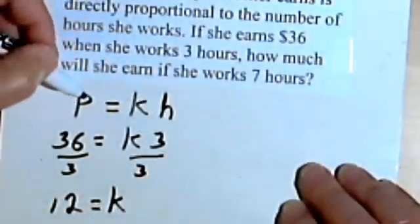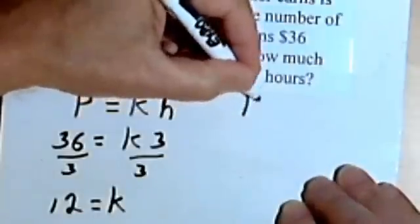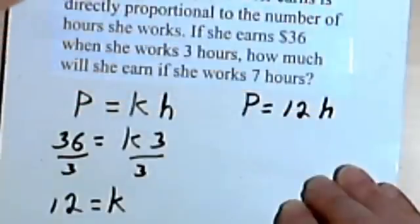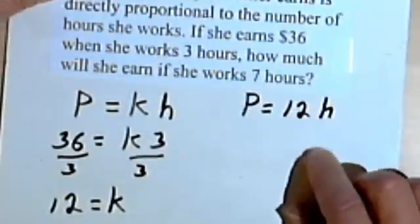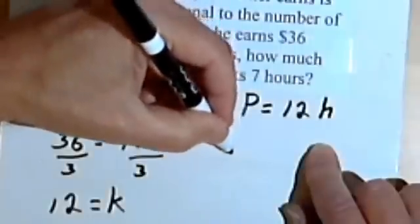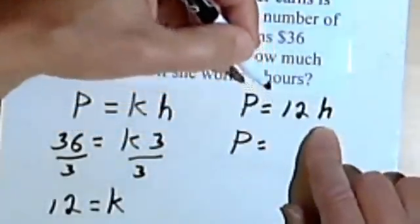So let's rewrite this general formula as something more specific. So the pay is equal to 12h. And we want to know how much she earns when she works 7 hours. So all I have to do is replace the h, the hours, with a 7.